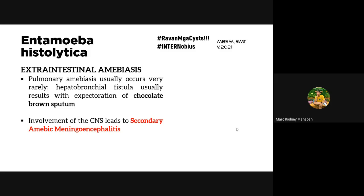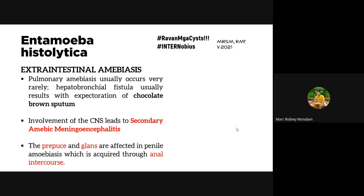Primary amoebic meningoencephalitis is caused by Naegleria fowleri. E. histolytica can also be transmitted sexually, especially during unprotected anal intercourse. This can cause ulcers on the glans, head of the penis, and prepuce/foreskin — an example of cutaneous/genital amoebiasis caused by trophozoites.